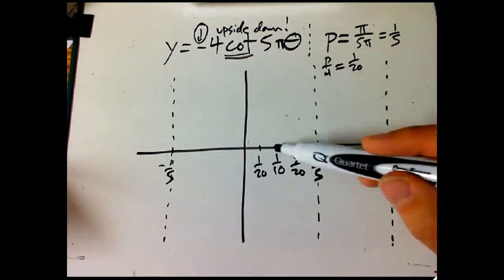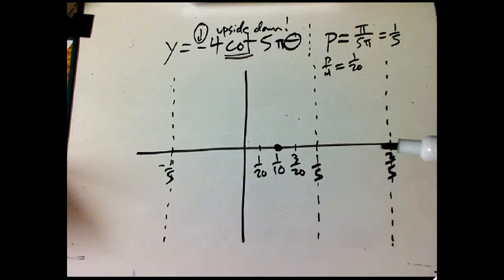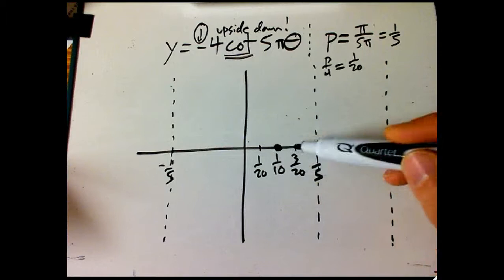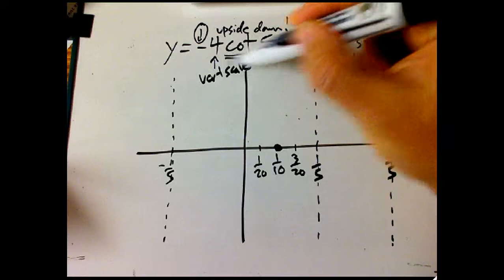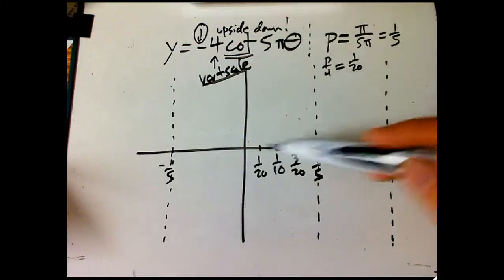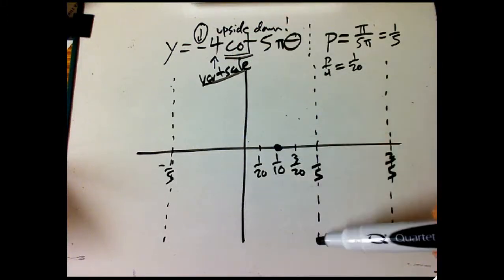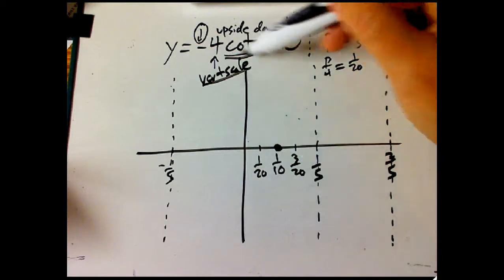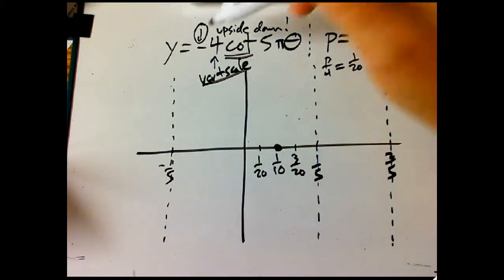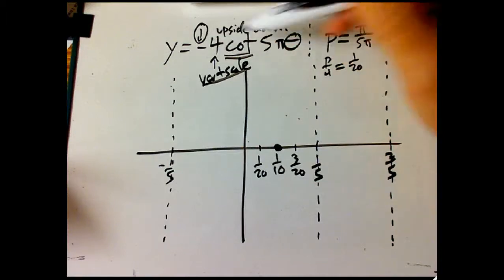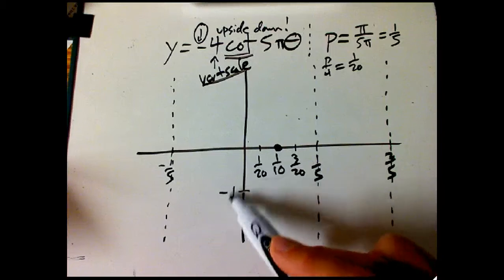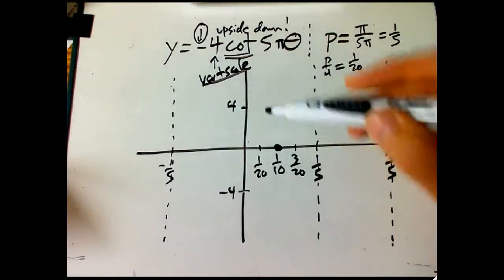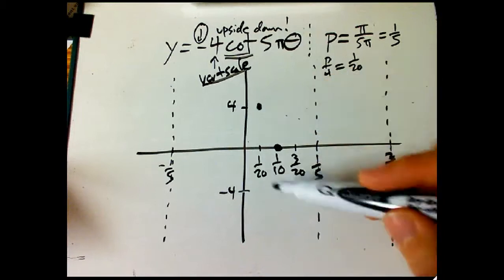Halfway between the asymptotes, cotangent goes through the x-axis — that's true of tangent and cotangent. The quarter period points are how we handle the vertical scale. At those quarter period points, cotangent achieves the value one, so minus 4·cotangent gives us ±4. We set a nice scale, and at one-twentieth it hits that value, and at three-twentieths it hits the other.